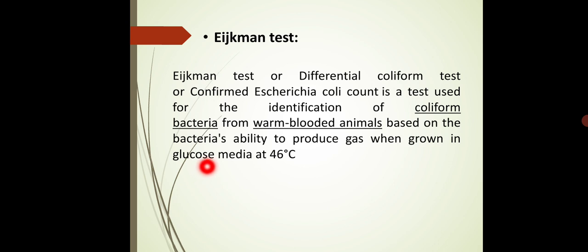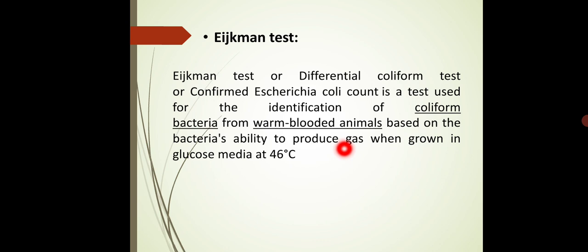The test identifies coliform bacteria based on the bacteria's ability to produce gas and acid when grown in a glucose or sugar medium at 46 degrees Celsius. We detect coliform bacteria from warm-blooded animals because we know that polluted water samples consist of human or animal feces, and humans and animals are examples of warm-blooded animals. So we detect coliform bacteria based on their ability to produce gas and acid in glucose medium at 46 degrees Celsius.